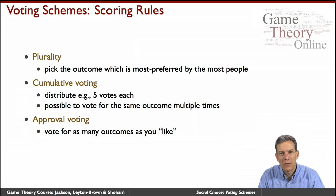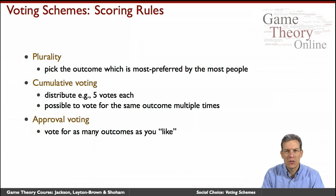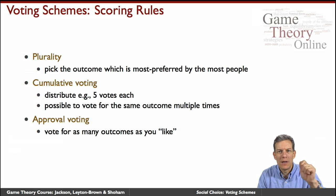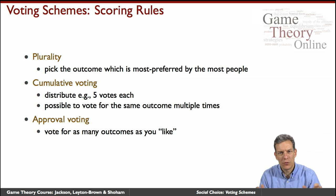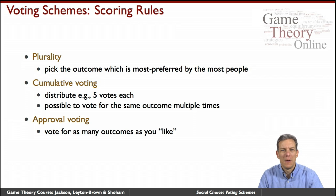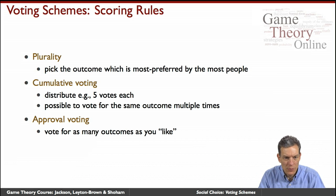What are some examples? The most basic and widely used is plurality rule — just picking the outcome that is most preferred by the most people. Everybody gets one vote, they express it, and assuming people are truthful and express their favorite, the social choice function picks the outcome most preferred by the most people.